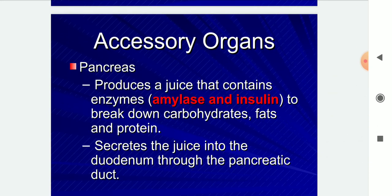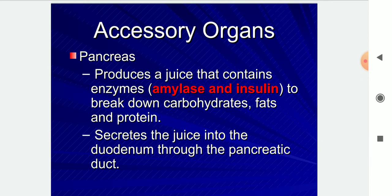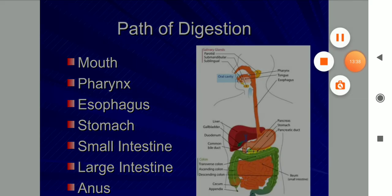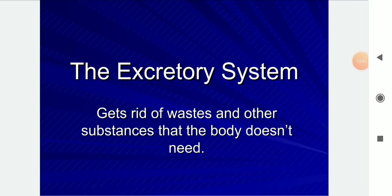The pancreas, another accessory organ, produces juice containing enzymes to break down carbohydrates, fats, and proteins, and secretes this juice into the duodenum through the pancreatic duct. The path of digestion is: mouth → pharynx → oesophagus → stomach → small intestine → large intestine → anus.